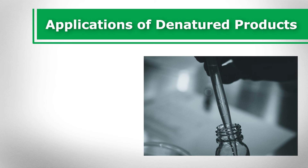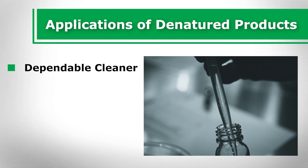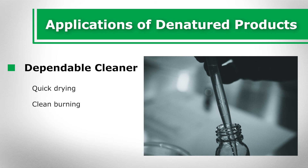Applications of denatured products: alternative denatured forms are used as a quick evaporating solvent by hobbyists, cleaning crews, painters, and manufacturing environments. Denatured alcohol is applied as a dependable cleaner to accomplish spot or grime removal. The quick drying properties are an exceptional function when the substance must not retain on the surface for an extended period of time. Camping stoves include denatured alcohol in fuels because it is an ideal clean burning solution that can be easily put out with water.